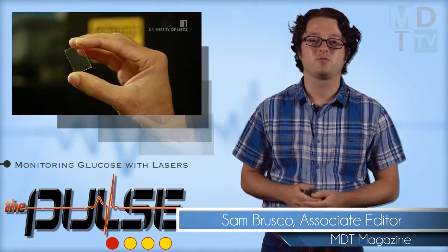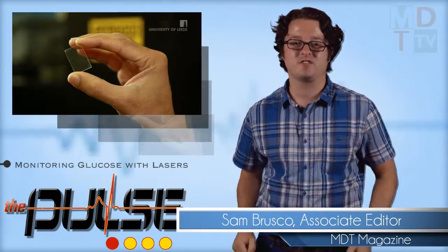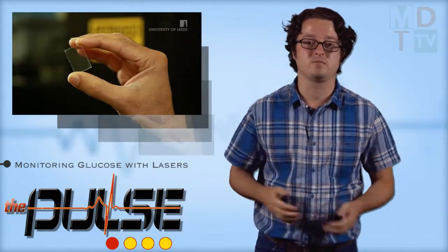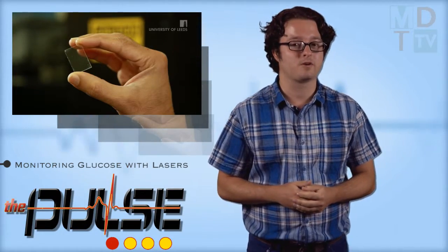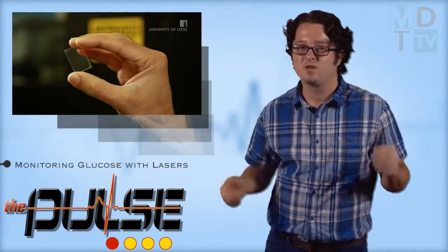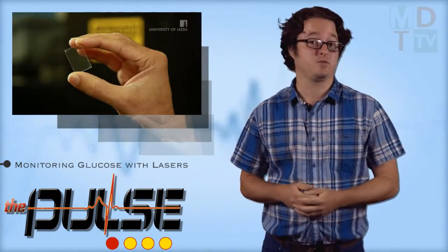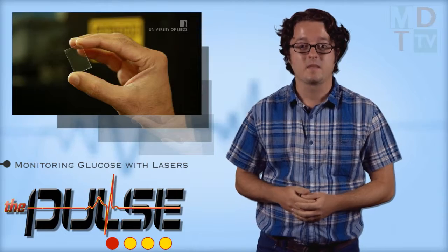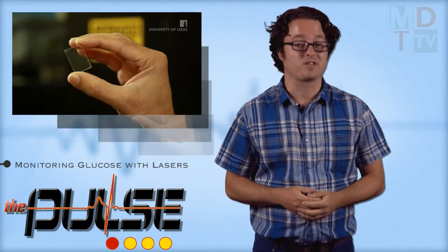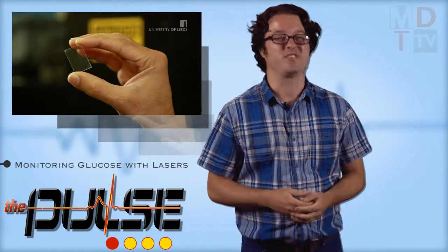Typically, diabetics monitor their glucose levels by pricking their fingers and squeezing the blood onto a test strip to be processed by a portable glucometer. This can be uncomfortable, messy, and will often have to be repeated several times a day, but a new type of glucose monitor will make the process a lot easier with lasers.